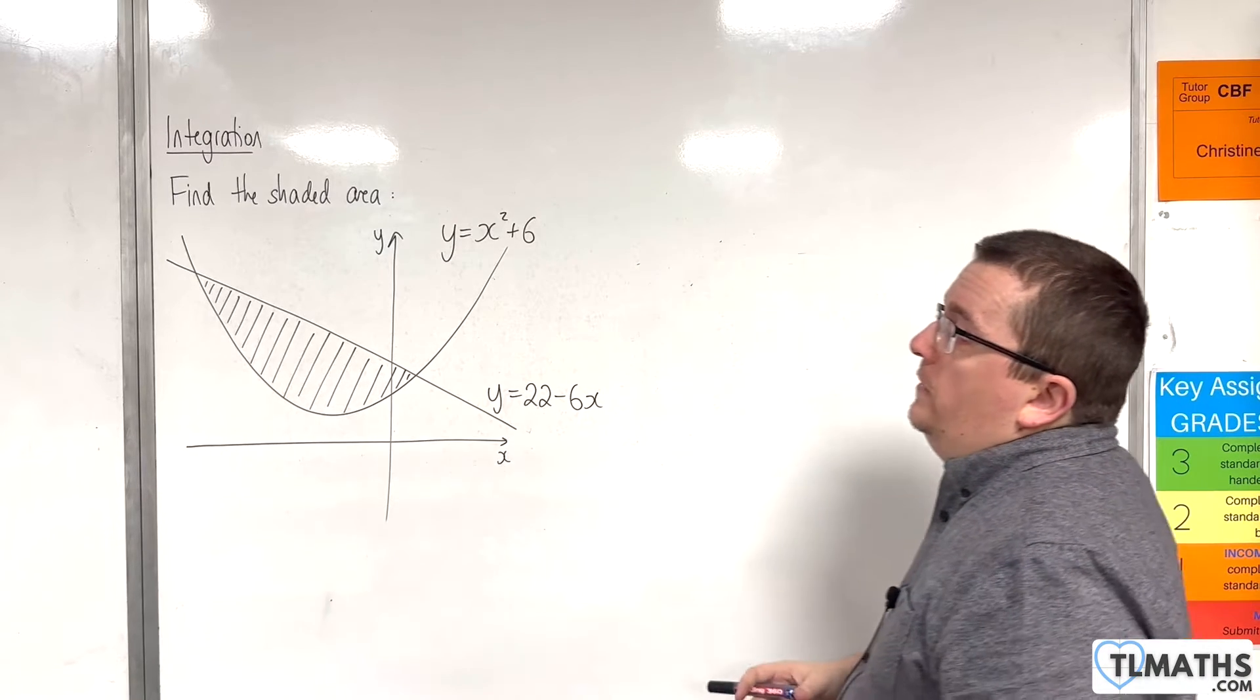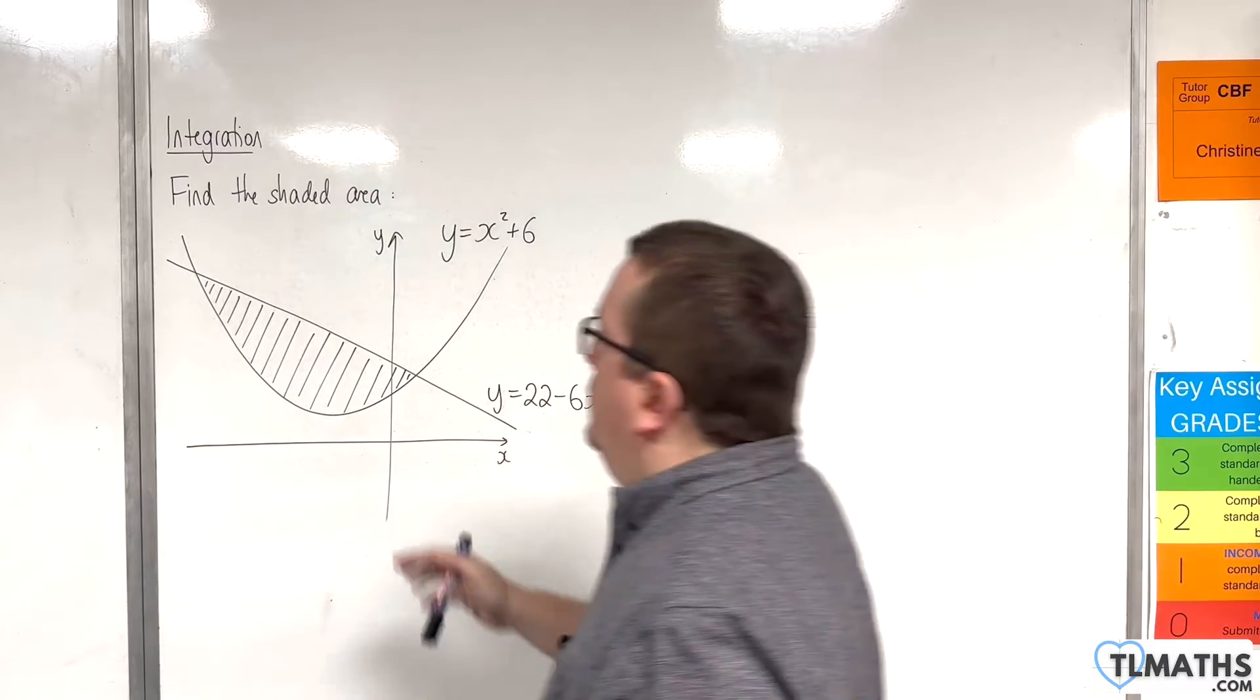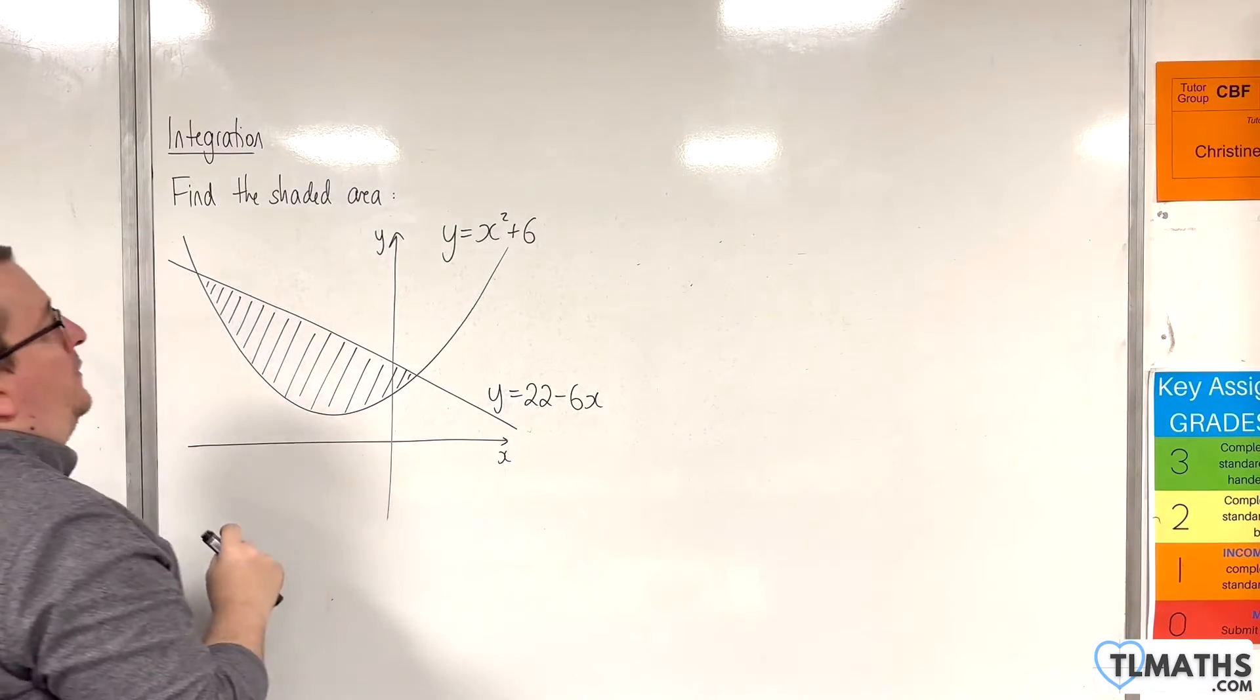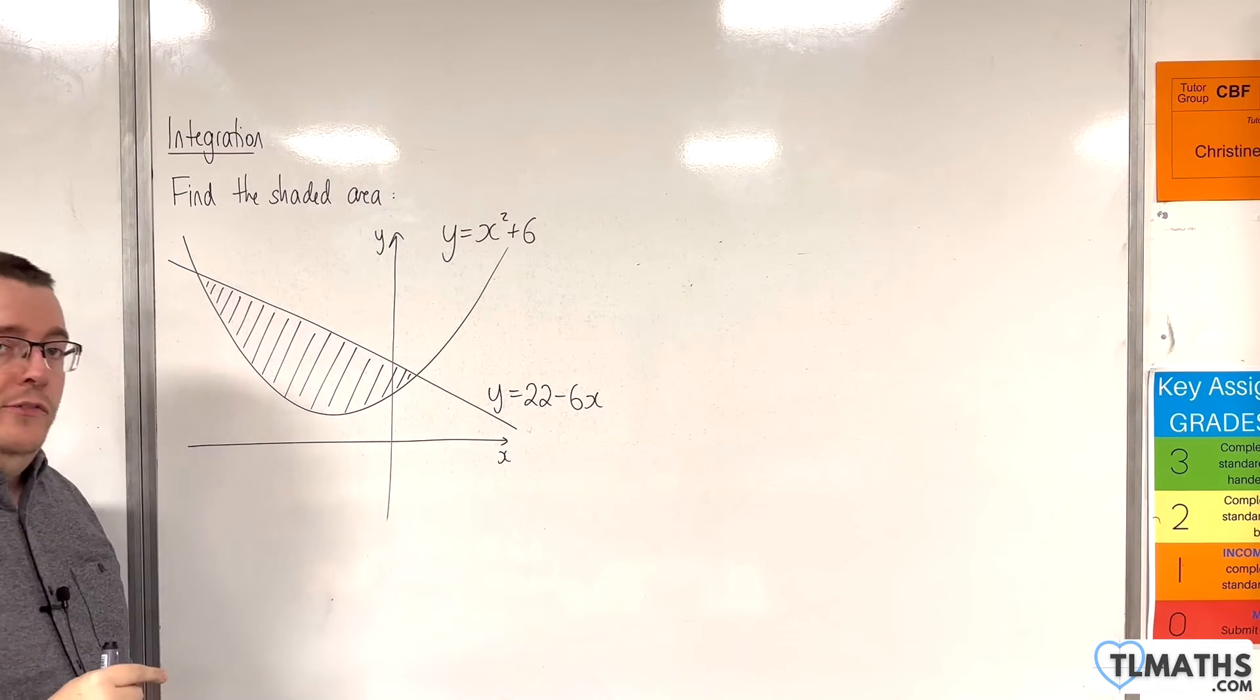So, in this video, we need to find the shaded area that is trapped between the line y equals 22 take away 6x and the curve y equals x squared plus 6.